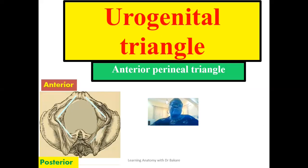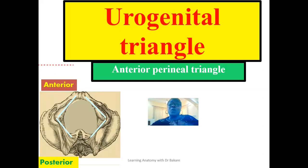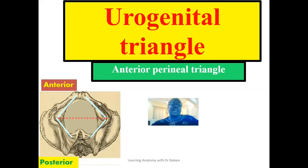This perineum has a diamond-shape configuration, demarcated in this image. This diamond-shape configuration is further subdivided into two triangles — one at the front and one behind. These triangles are created by an imaginary line that runs from one ischial tuberosity on the right to the other ischial tuberosity on the left. The triangle at the front is referred to as the urogenital triangle, and behind we have the triangle referred to as the anal triangle.